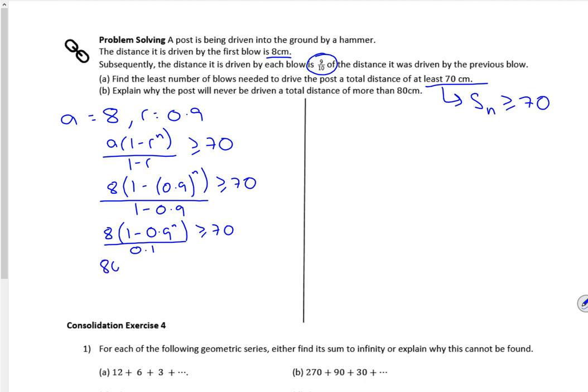Divide by 0.1 gives me 80. Divide through by 80 gives me 70 over 80, which is 7 eighths. If I do a little bit of rearranging, I've got 1 minus 7 over 8 is greater than or equal to 0.9 to the n. So I've got 1 eighth there.